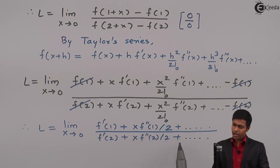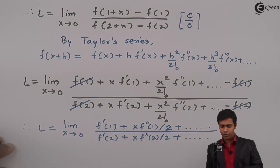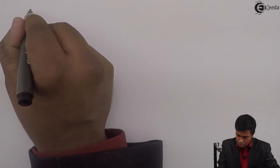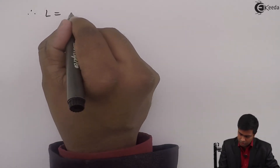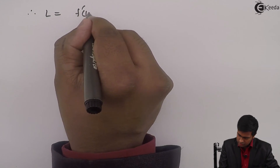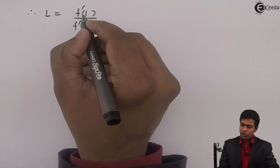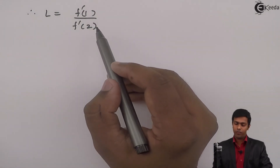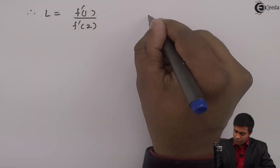In the numerator, when we substitute x→0, the second term and all further terms become 0, giving f'(1). In the denominator, similarly all terms beyond the first become 0, giving f'(2). Therefore, L = f'(1) / f'(2). To get the value of the limit I have to find f'(1) and f'(2).